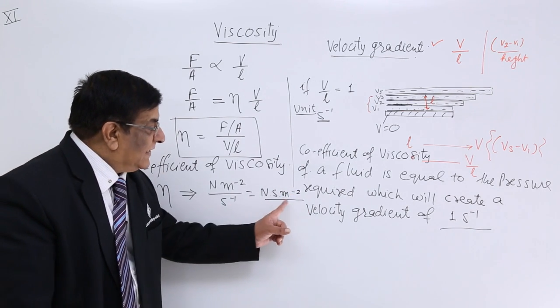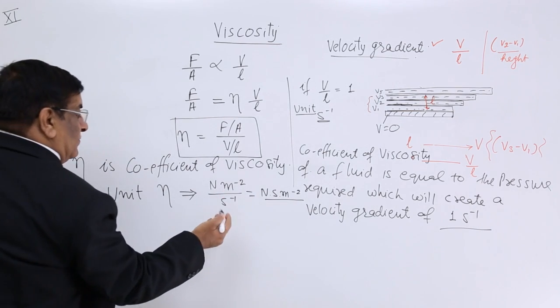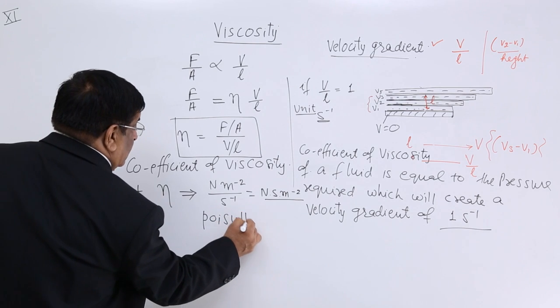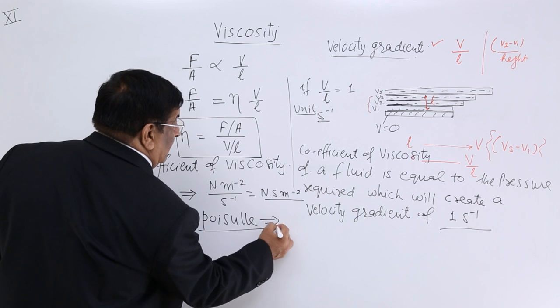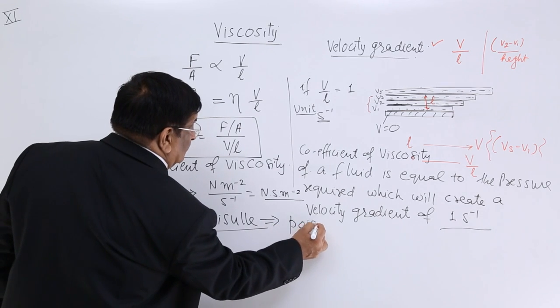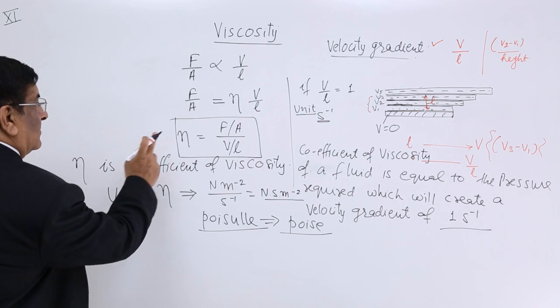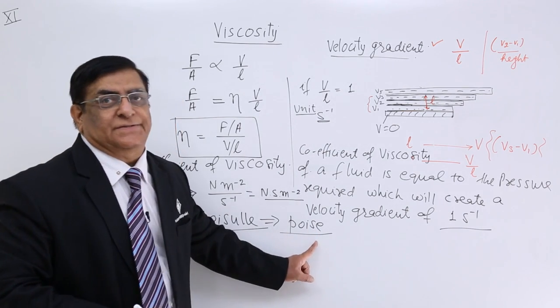But this is complicated, so we don't use it. We derived this unit and gave it a new name, Poise. Or in brief, we call it Poise. So the coefficient of viscosity is measured in Poise.